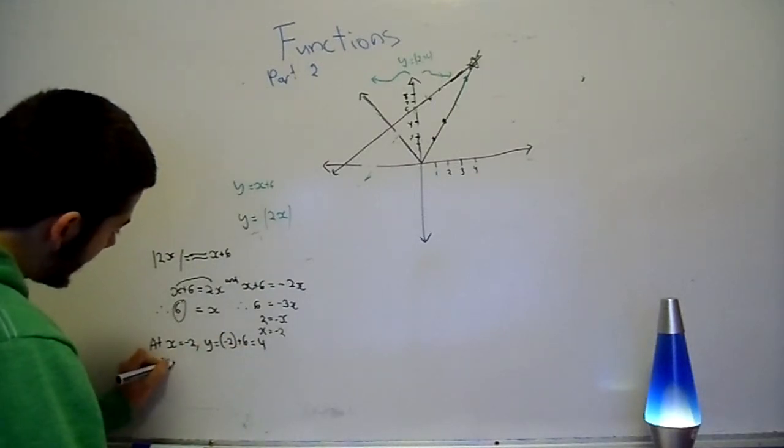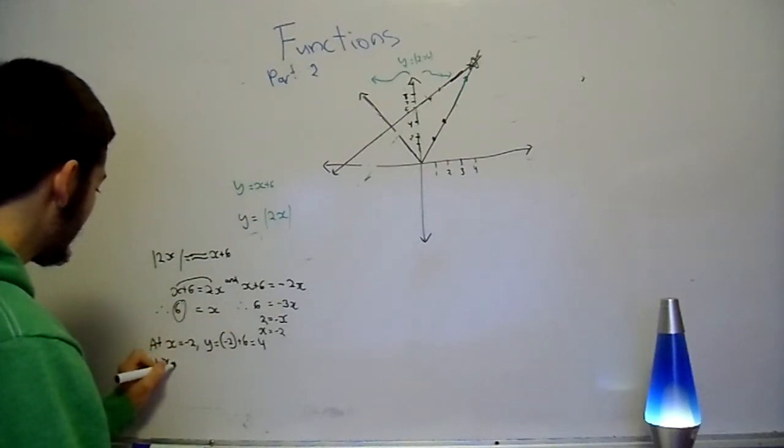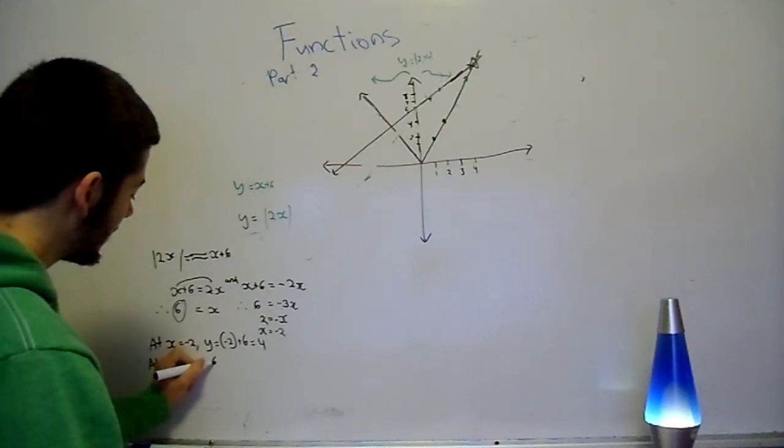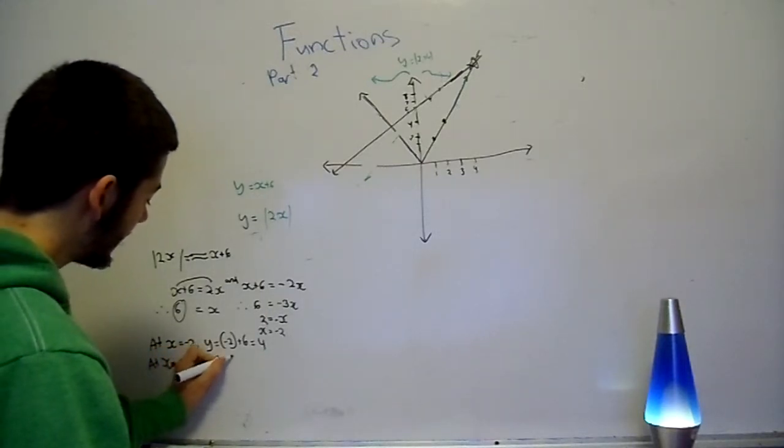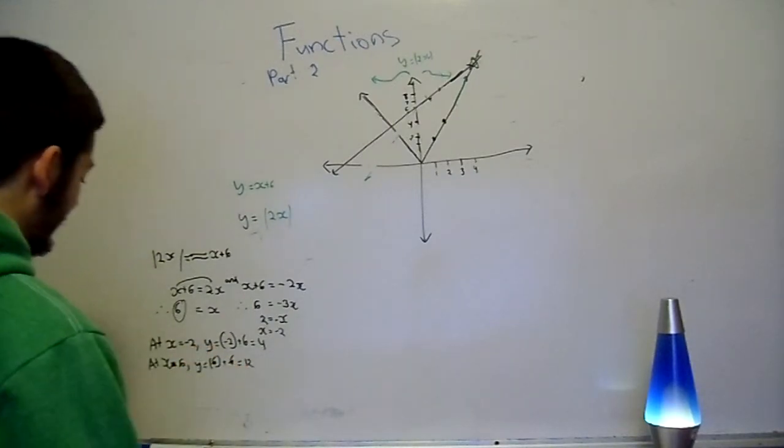At x is equal to, another one, x is equal to 6, comma, y is equal to 6 plus 6. And that is going to give us 12.